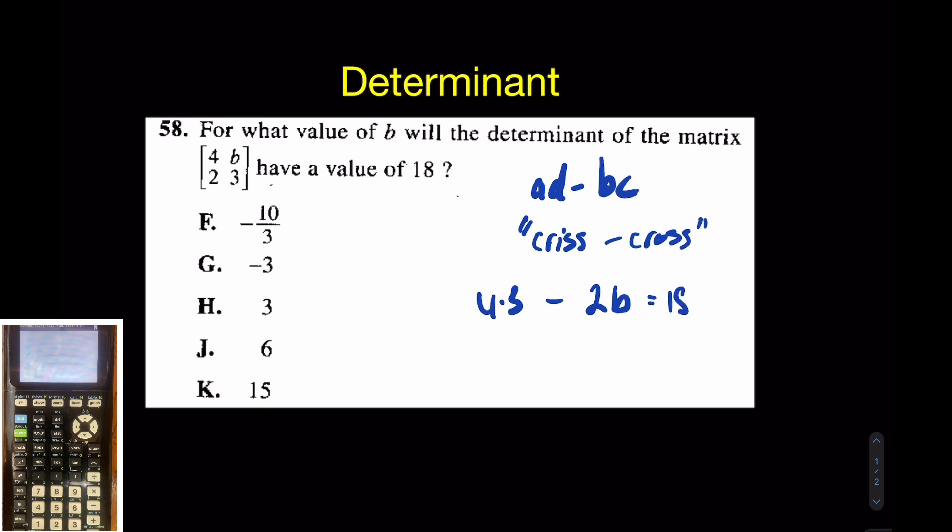Of course, you'd set that equal to 18, and you'd solve. Your calculator can also do this trick if you want. Of course, by hand, it's pretty fast. But all you have to do is press, again, second matrix, go to math, and then det.